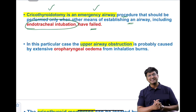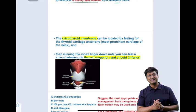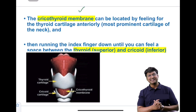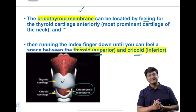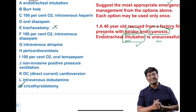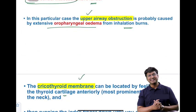In this clinical scenario, the individual was exposed to fire causing stridor due to constriction of the trachea. The upper airway obstruction is caused by extensive oropharyngeal edema from inhalational burns. The cricothyroid membrane is located by feeling from the thyroid cartilage, running the index finger down to the space between the thyroid and cricoid cartilage. That is where you perform the cricothyroidotomy.